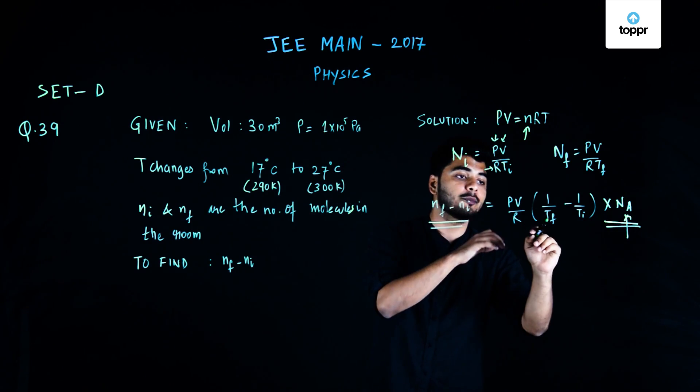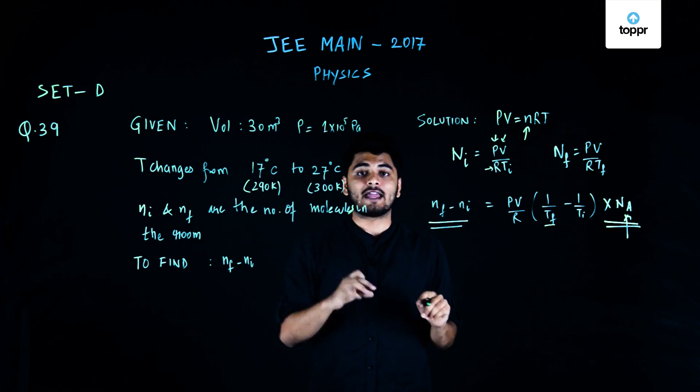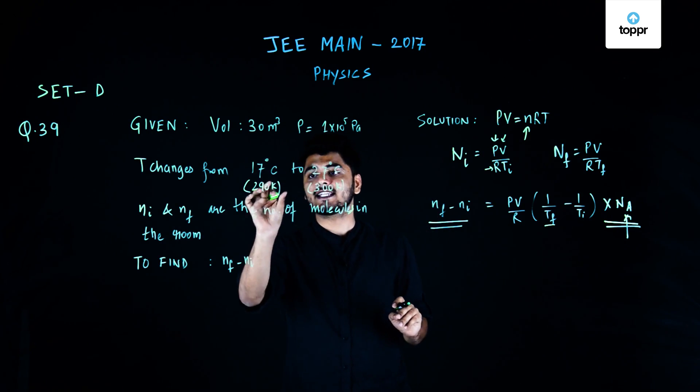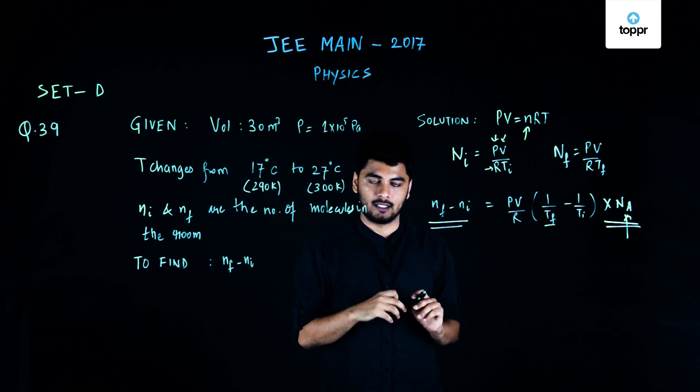Now, one thing to note over here is we cannot put T in degree Celsius, we have to put it in Kelvin. So, 17 is nothing but 290 Kelvin and 27 is 300 Kelvin.